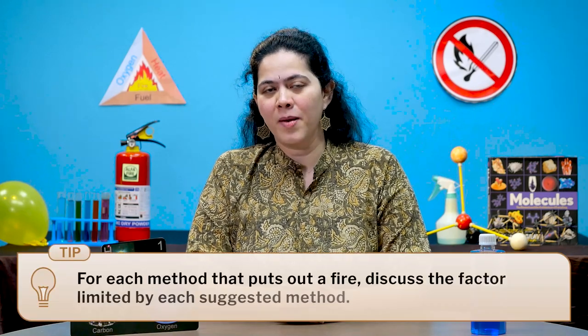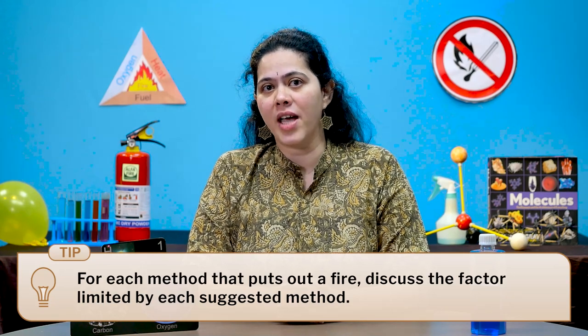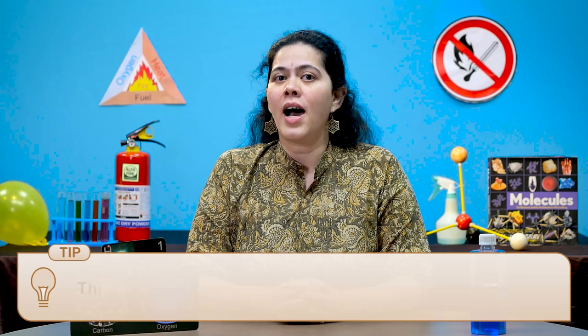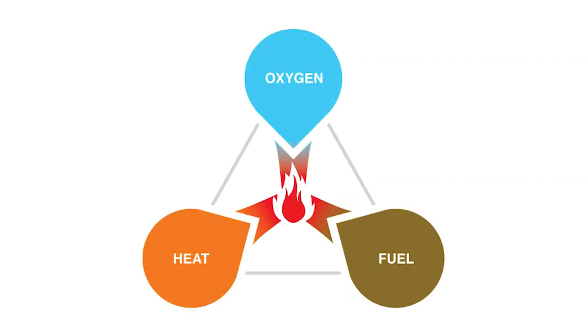Surprisingly, the students responded with things that put out a fire. They talked about measures like pouring water or putting sand on fire. We then tried to find the answer to our original question using this information, and discussed whether these methods of extinguishing fires would work in all scenarios. Asking why these methods work led us to the answer: a fire triangle is required for a fire to persist. The fire triangle consists of fuel, ignition temperature or heat, and oxygen — all three are required for a fire to persist.